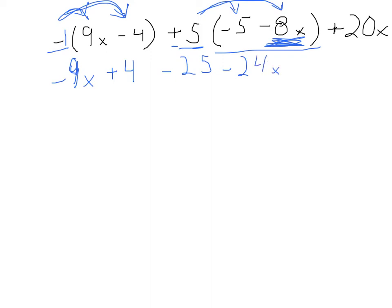And then here we have just a positive 20x by itself, so we'll just bring down plus 20x. Now we're ready to combine like terms. Well, we have negative 9x minus 24x, or you'll remember from integers that's the same as plus negative 24x, and then we have a 20x.